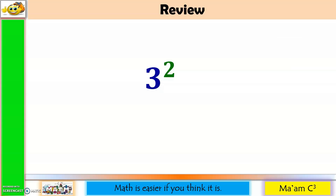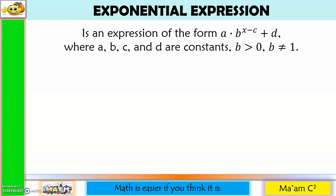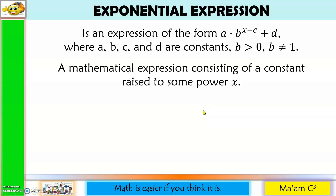Let's have a quick review. Here, 3 is the base and 2 is the exponent. Let us define exponential expression. It is an expression of the form a times b raised to x minus c plus d, where a, b, c, and d are constants, with b greater than 0 but not equal to 1. b is the constant that is raised to a variable. Another definition: it is a mathematical expression consisting of a constant raised to some power x, meaning our base is a constant and our exponent contains a variable.